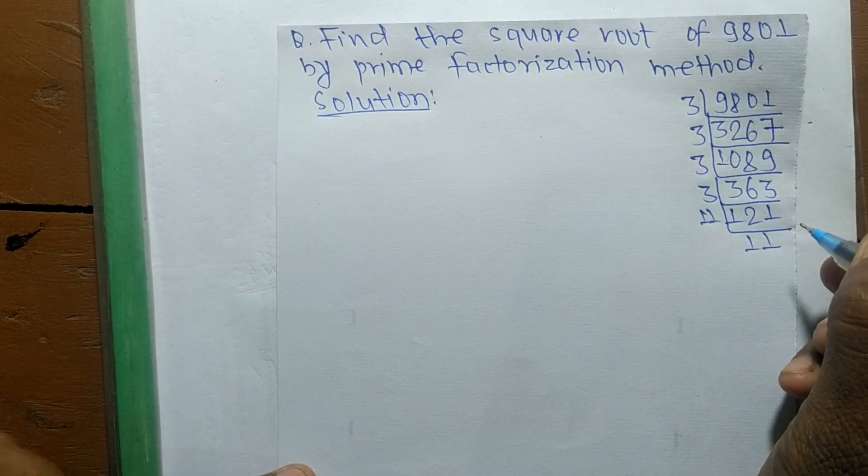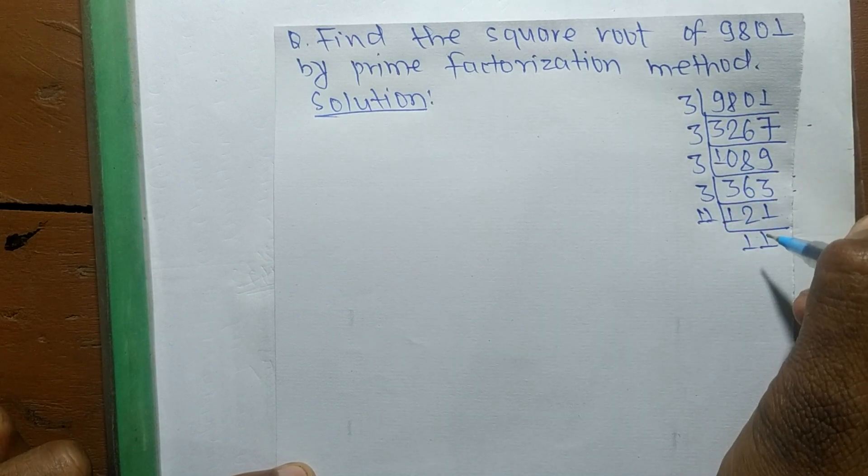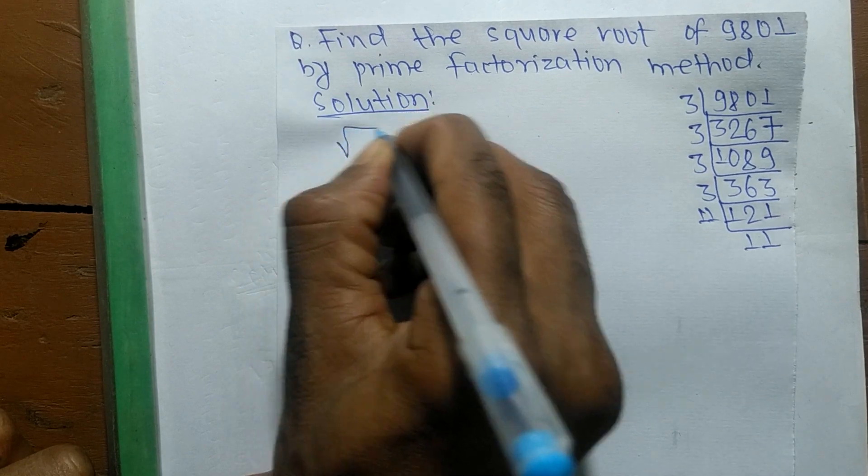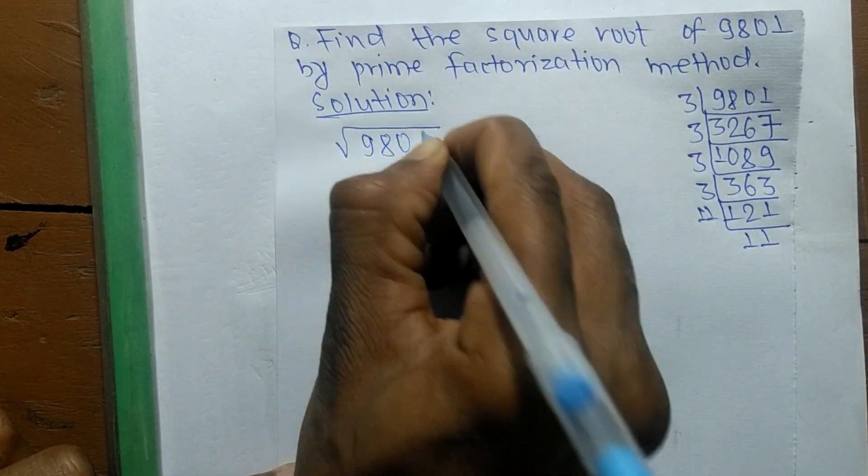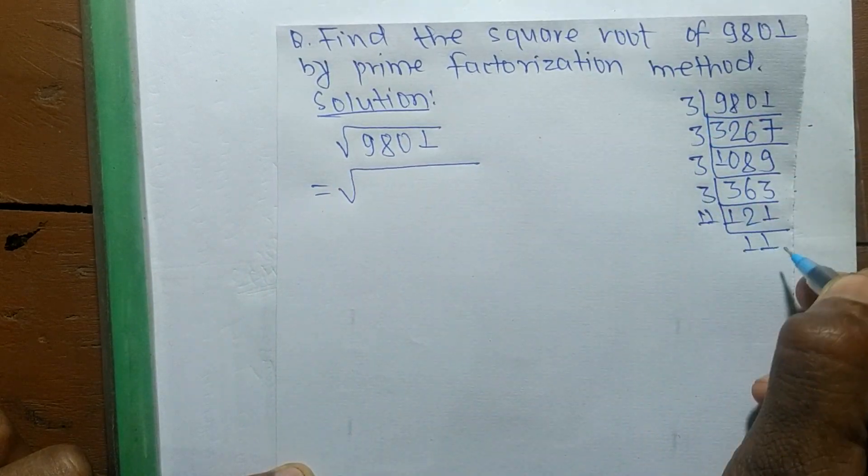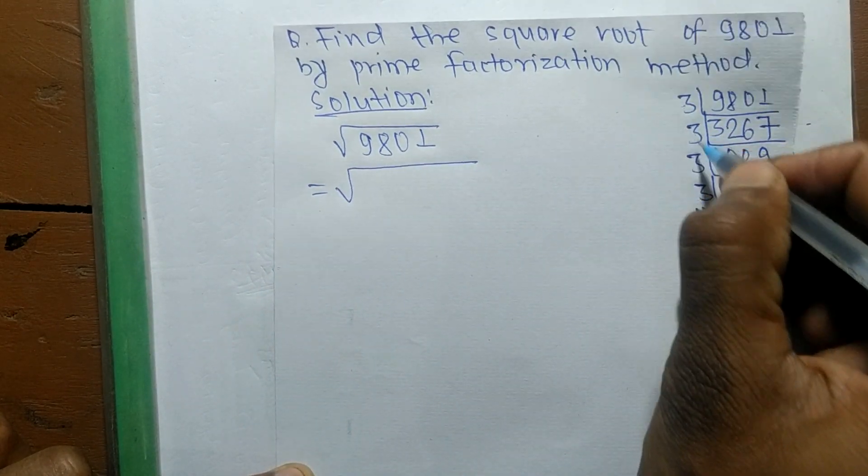The square root of 9801 equals - from the prime factors, we can write 3 appears four times, which is two pairs, and 11 times 11. So by writing all these prime factors,